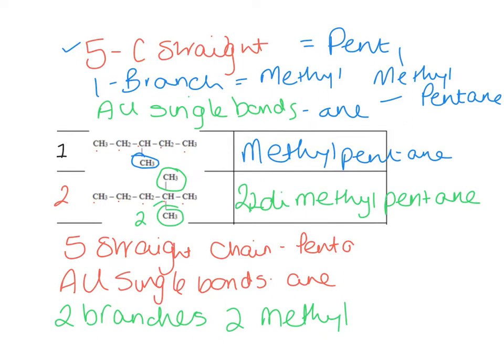Let's go through that name. The 2s tell me whereabouts on the carbon chain the branches are. The 'di' tells me there are two methyl branches, and we know a methyl branch is just a CH3. Pent tells me five, and A-N-E means all single bonds.